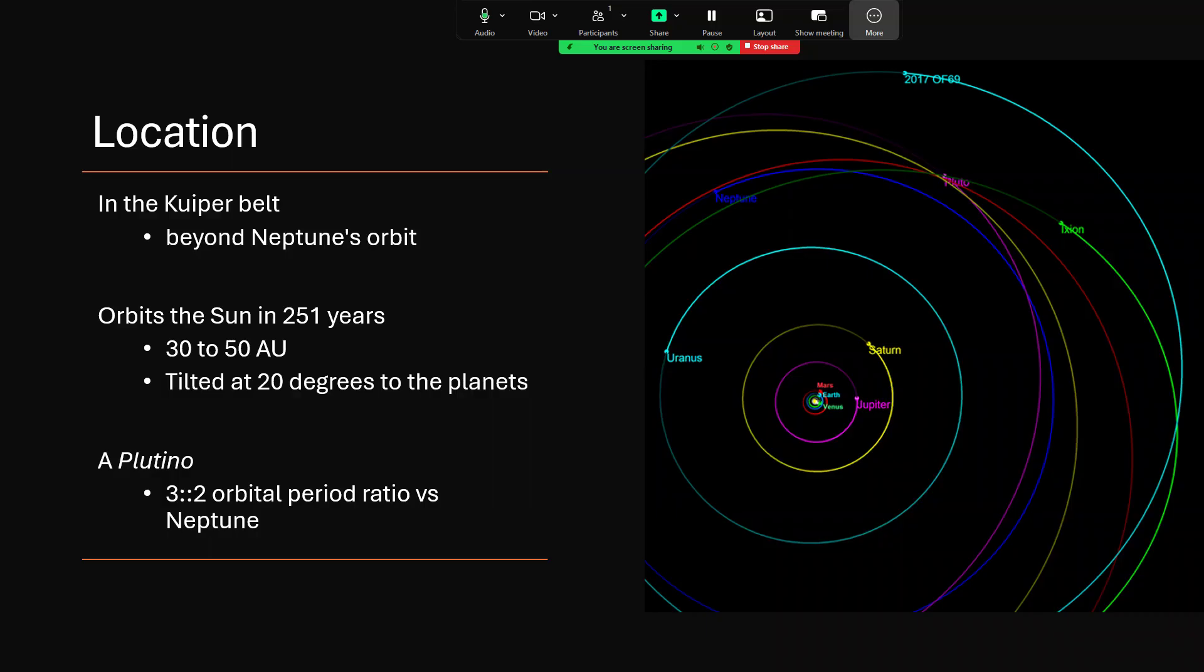It's in a three to two orbital relationship. So Neptune does three orbits for every two that Ixion does. And that odd numbered ratio of one and a half to one, if you like, means it keeps meeting Neptune in opposite sides of the sun and getting alternating gravitational tugs from it. And that keeps it in a long term stable position.